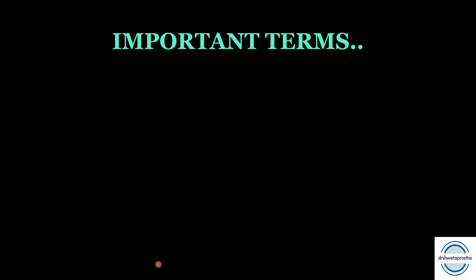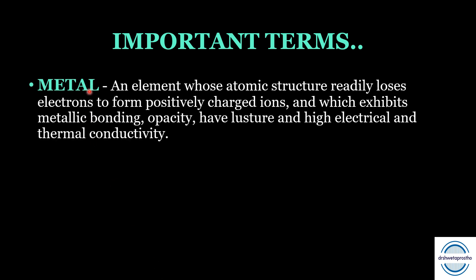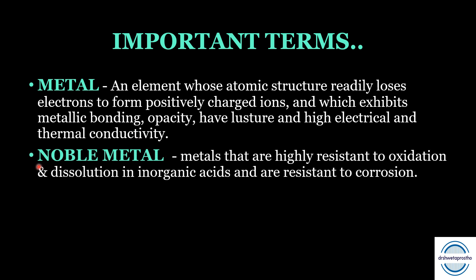There are some important terms you should know. First is metal: any element whose atomic structure readily loses electrons to form positively charged ions. It exhibits metallic bonding, opacity, luster, and high electrical and thermal conductivity. These metals can be noble or base depending on their properties. Noble metals are highly resistant to three things: oxidation, dissolution in organic acids, and corrosion. That is why they are used for fabricating inlays, crowns, and FPDs because they are resistant to corrosion in the mouth.